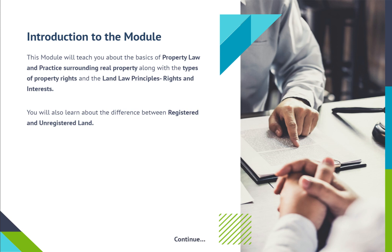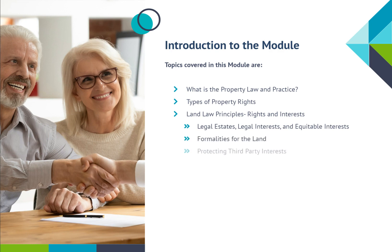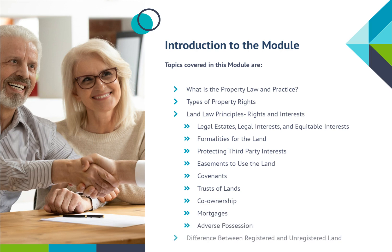You will also learn about the difference between registered and unregistered land. Topics covered in this module are: What is property law and practice? Types of property rights. Land law principles, rights and interests. Legal estates, legal interests, and equitable interests. Formalities for the land. Protecting third party interests. Easements to use the land. Covenants. Trusts of lands. Co-ownership. Mortgages. Adverse possession. Difference between registered and unregistered land.